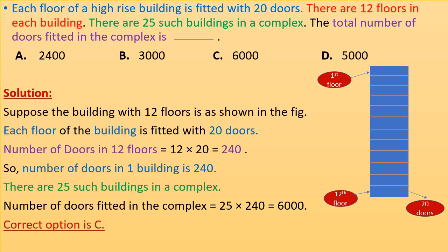There are 12 floors in one building and 20 doors in each floor. So the number of doors in 12 floors is 12 × 20 = 240. The number of doors in one building is 240. There are 25 such buildings in the complex, so the total number of doors equals 25 × 240 = 6000. The correct option is C.